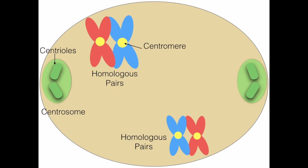During prophase 1, centrosomes also form that grow spindle fibers that attach to the centromere in the chromosome.